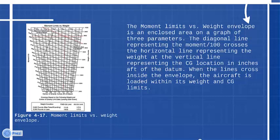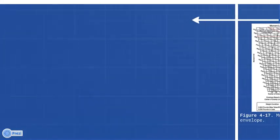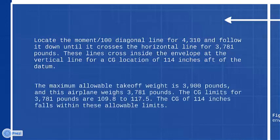Takeoff: 3,781 pounds and 4,310 moment divided by 100. Landing: 3,571 pounds and 4,050 moment divided by 100. Locate the moment divided by 100 diagonal line for 4,310 and follow it down until it crosses the horizontal line for 3,781 pounds. These lines cross inside the envelope at the vertical line for a CG location of 114 inches aft of the datum.